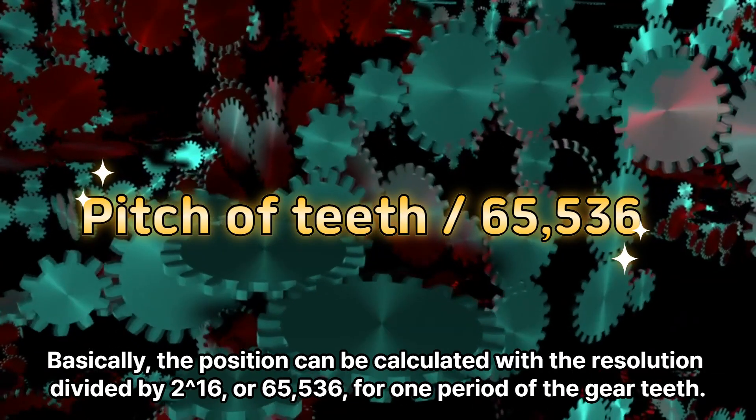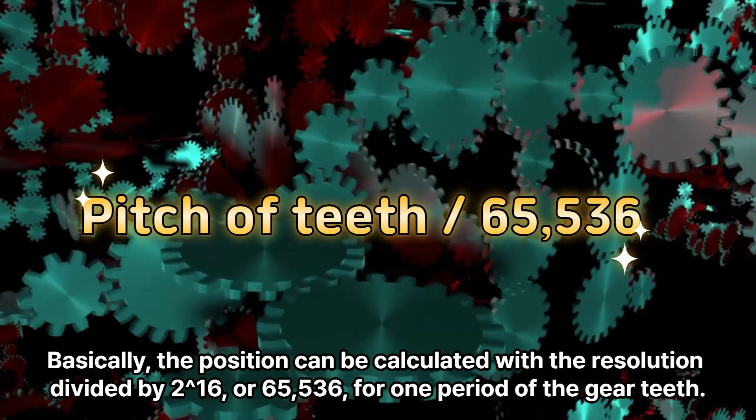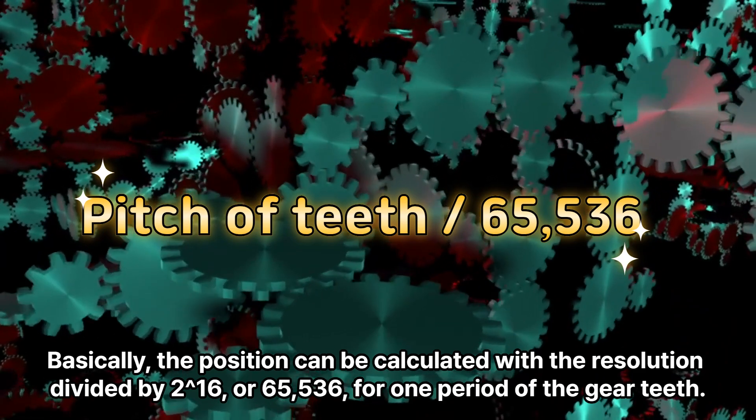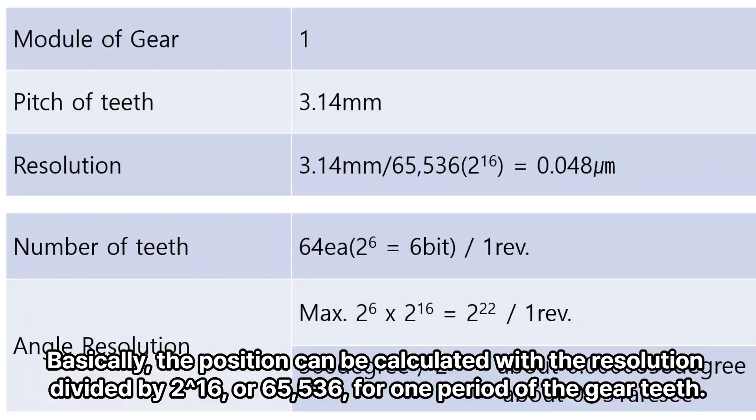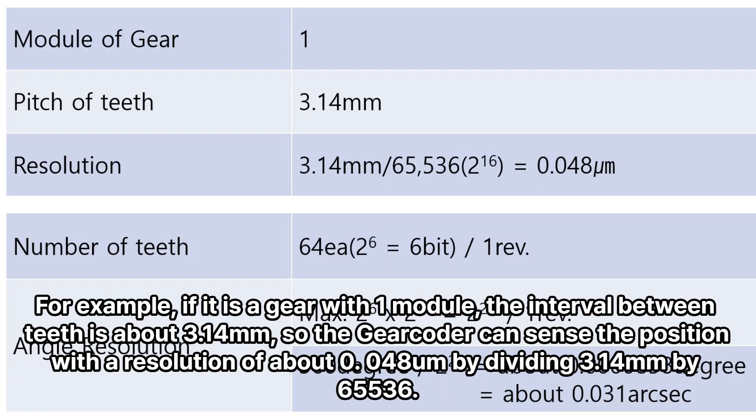Basically, the position can be calculated with the resolution divided by 2 to the 16th power, or 65,536, for one period of the gear teeth. For example, if it is a gear with one module, the interval between teeth is about 3.14 mm. So the gearcoder can sense the position with a resolution of about 0.048 micrometers by dividing 3.14 mm by 65,536.